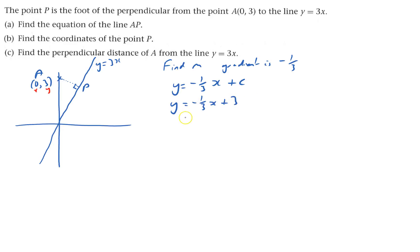If you want to, you'll times everything through by 3 to get 3y equals minus x plus 9. And add x to both sides. So you get x plus 3y equals 9. It doesn't say exactly how it should be. So you'll be perfectly okay with this.